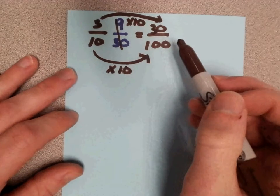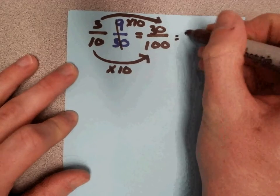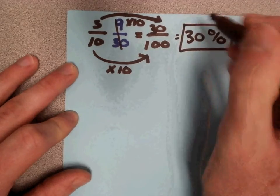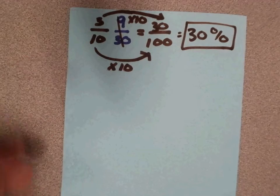Any time the bottom number, the denominator, is 100, just take the top number and put it in front of the percent sign. So 9 thirtieths is 30%.